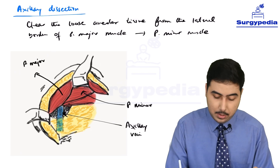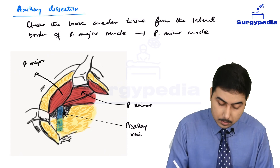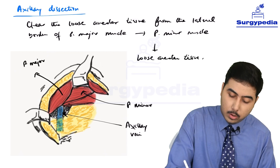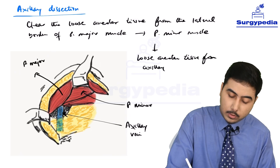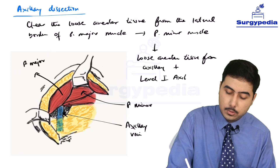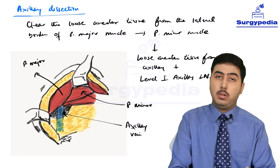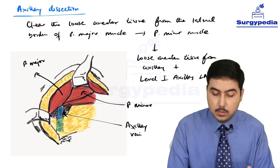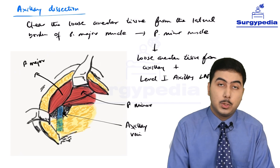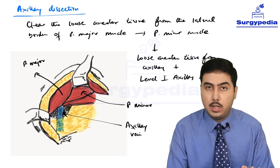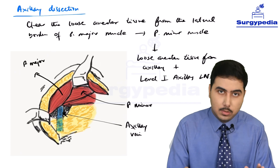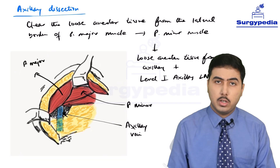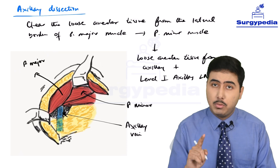We should be very careful while dissecting anything near the axillary vein. After clearing the loose areolar tissue from the lateral border of pectoralis major, we clear the loose areolar tissue from the axilla and level one axillary lymph nodes. A word of precaution in all these steps of axillary dissection: we should be very careful when dissecting near the axillary vein and axillary artery, because injuring them or an important nerve can lead to significant complications.